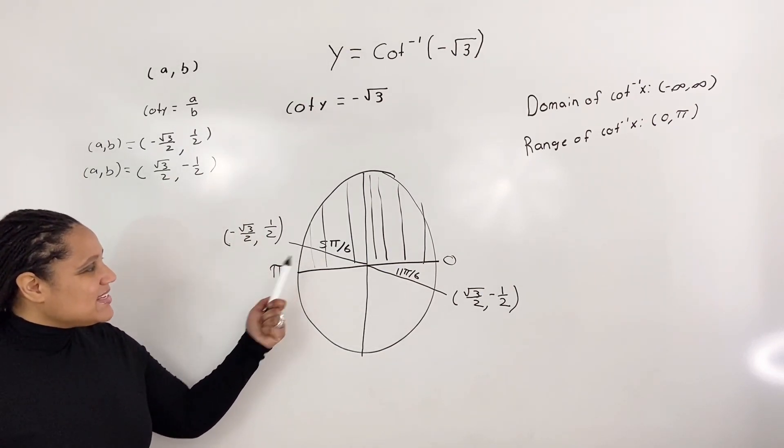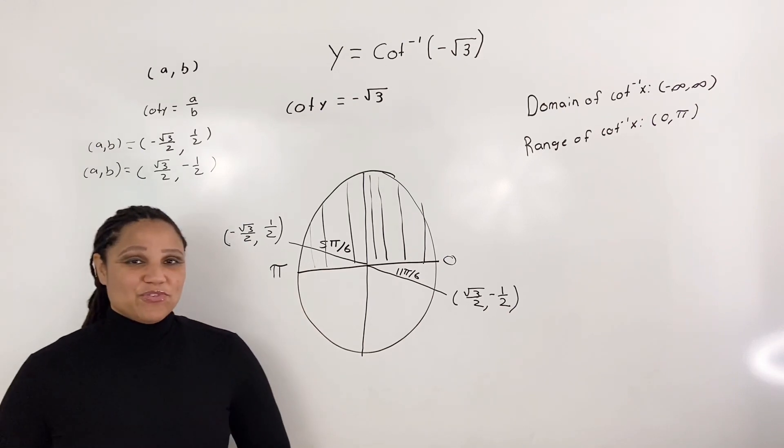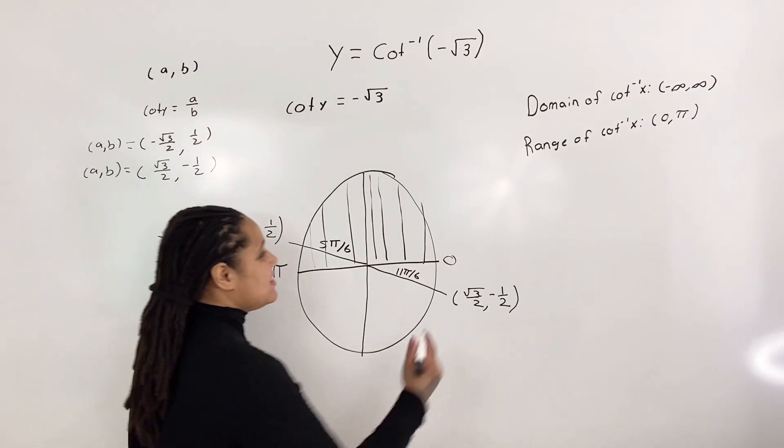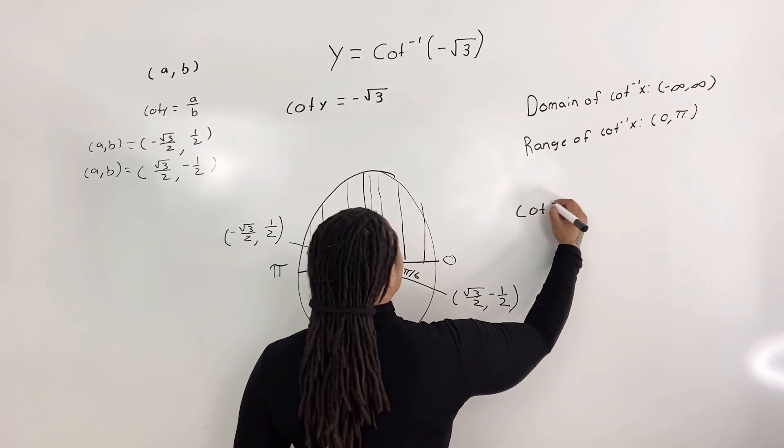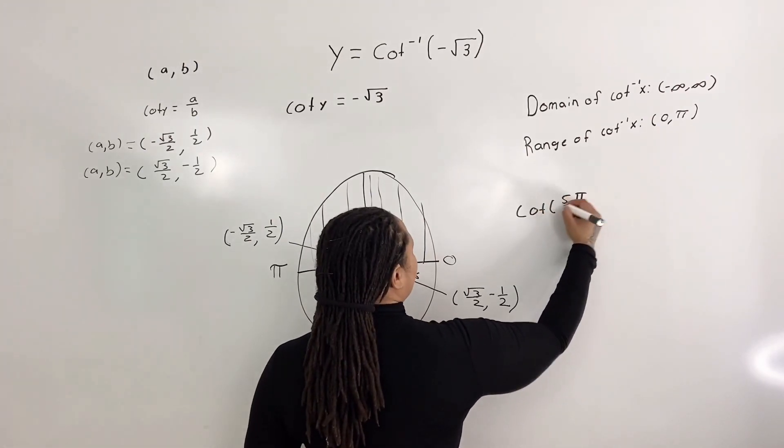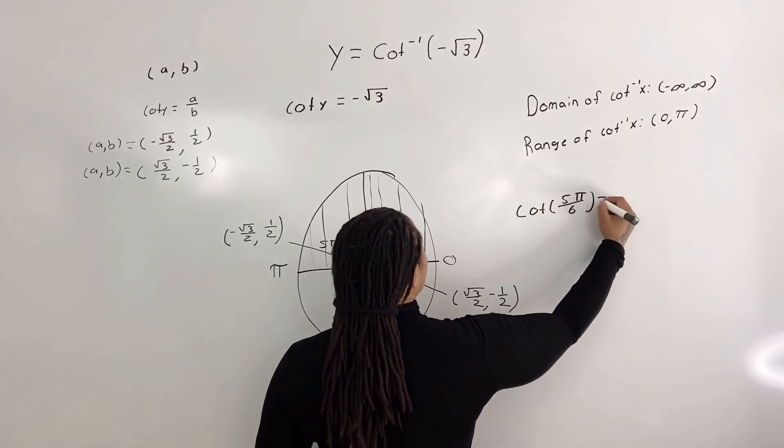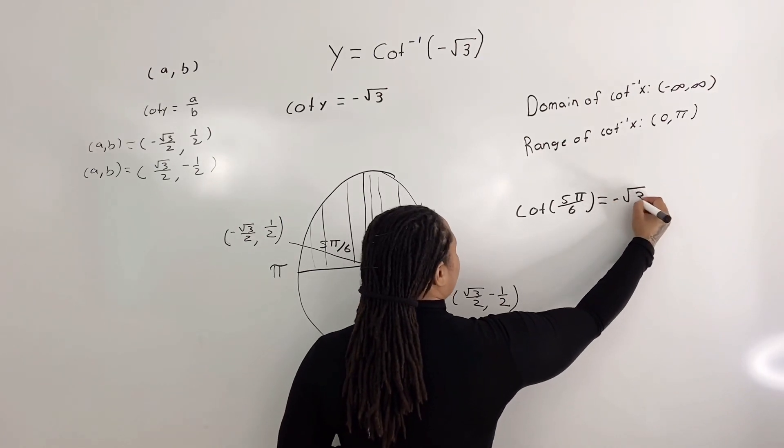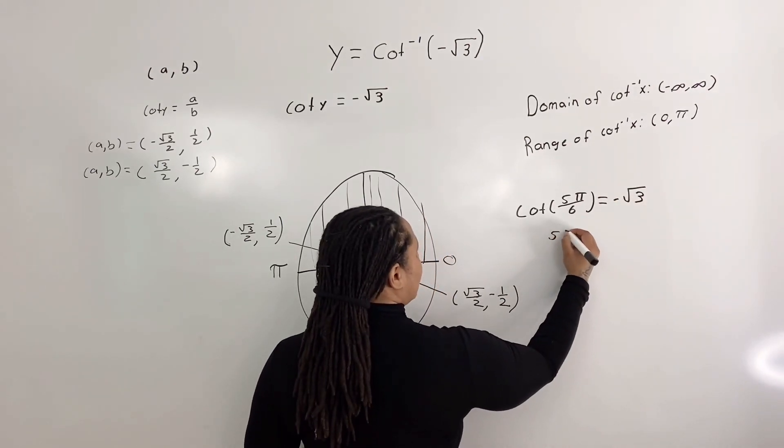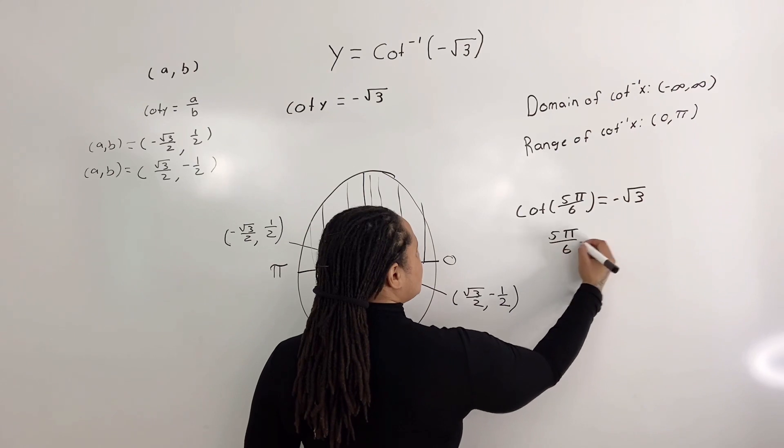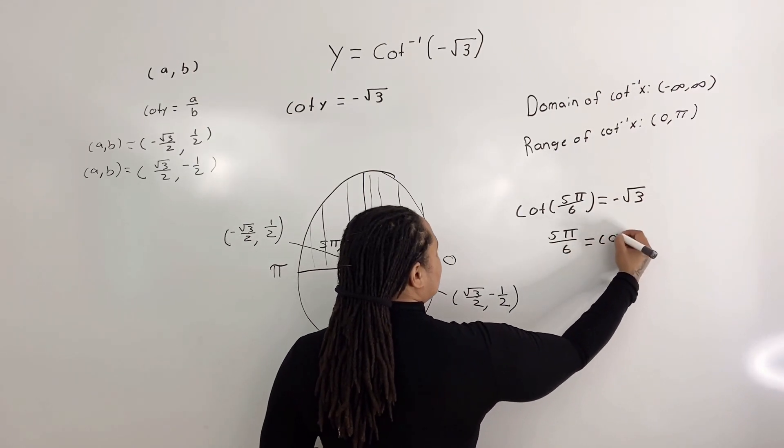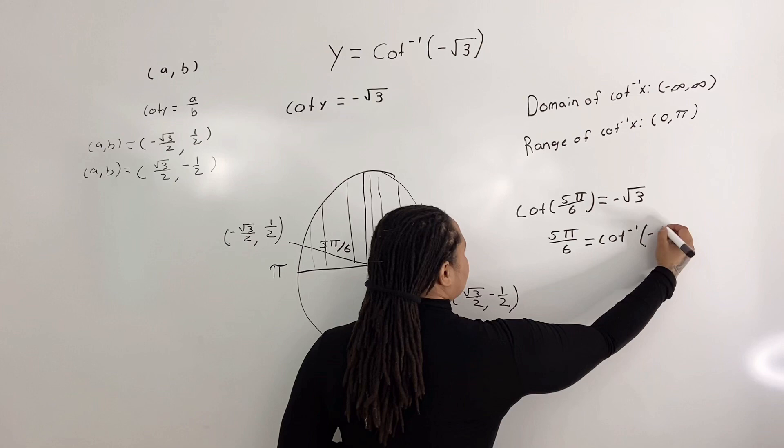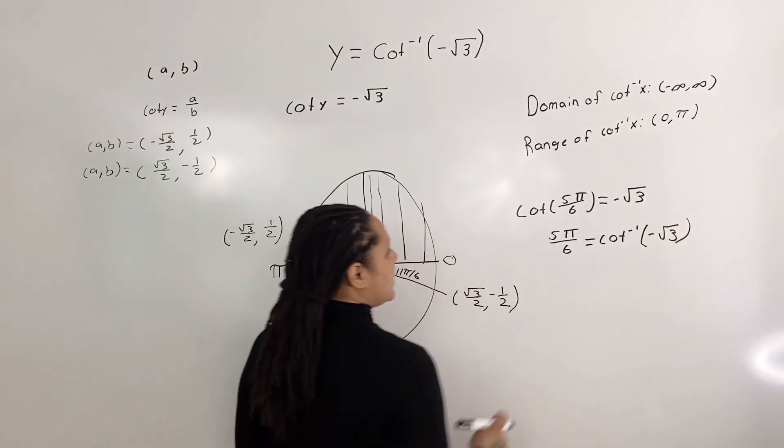So what this means is that we can completely eliminate 11 pi over 6. So that means that our only value is 5 pi over 6. So we say that cotangent of 5 pi over 6 equals negative root 3,